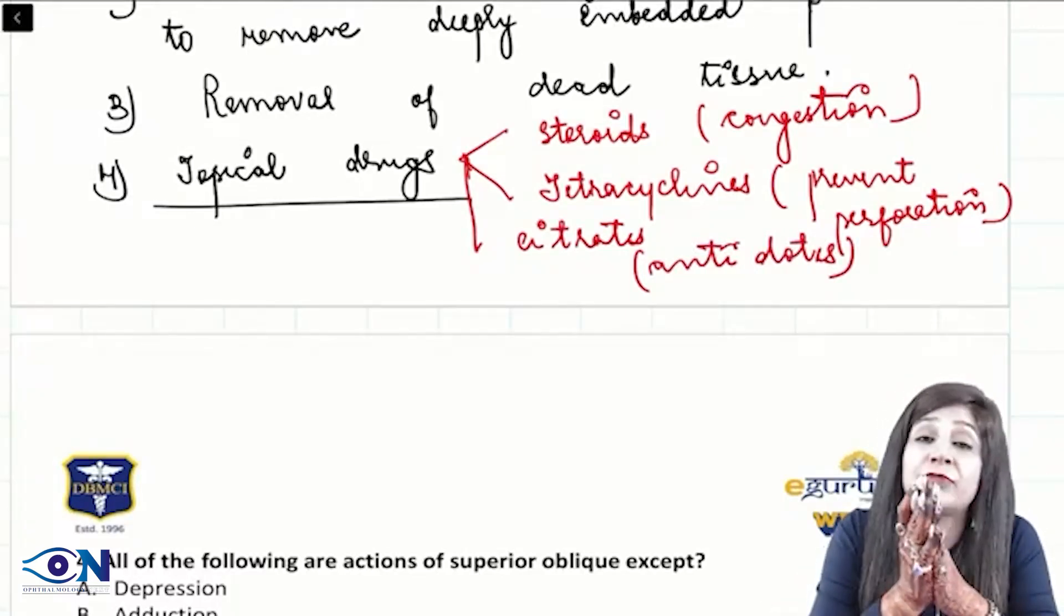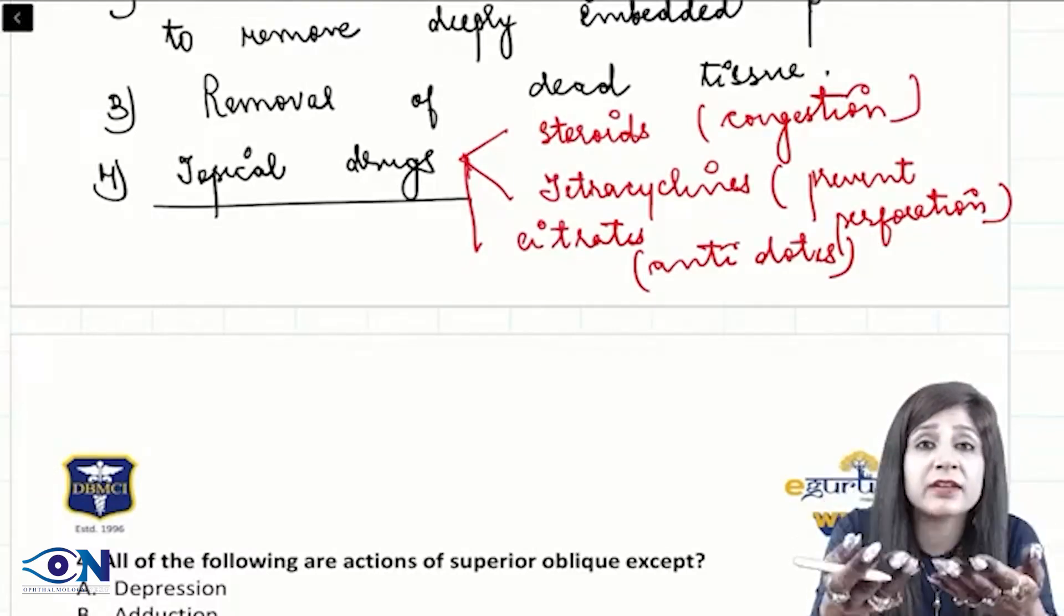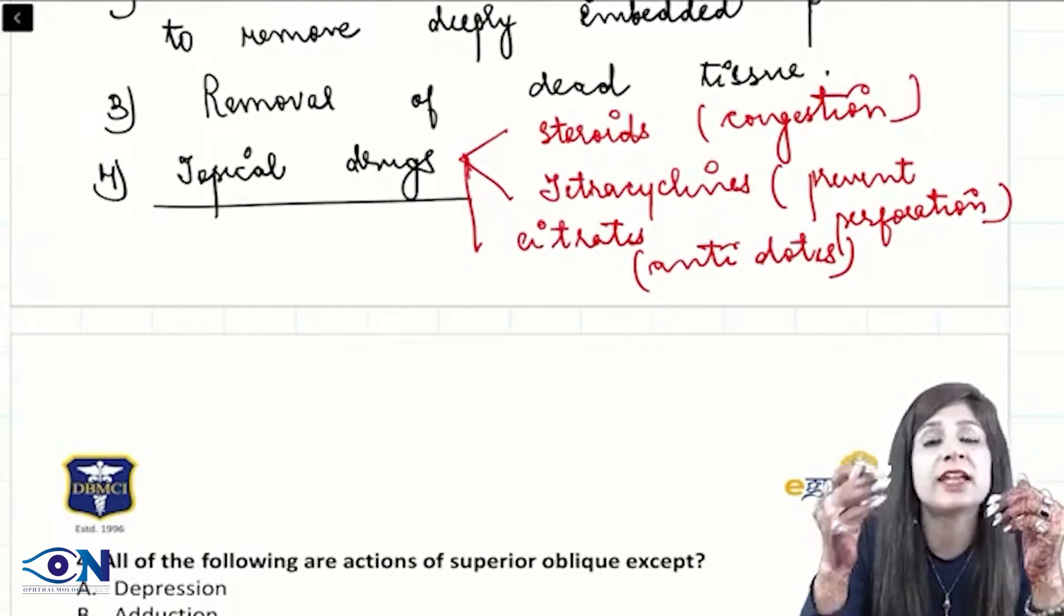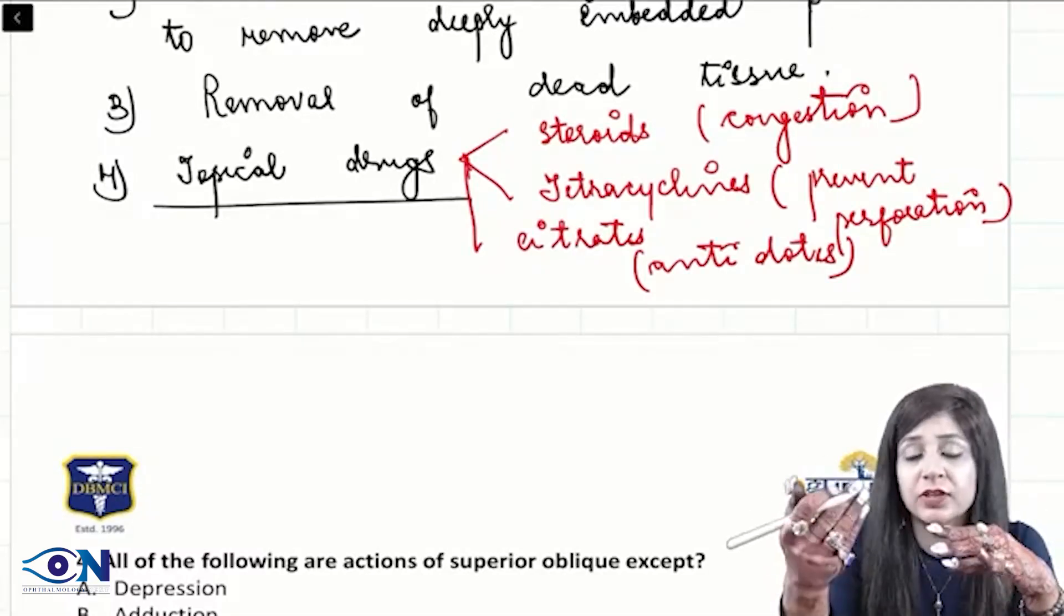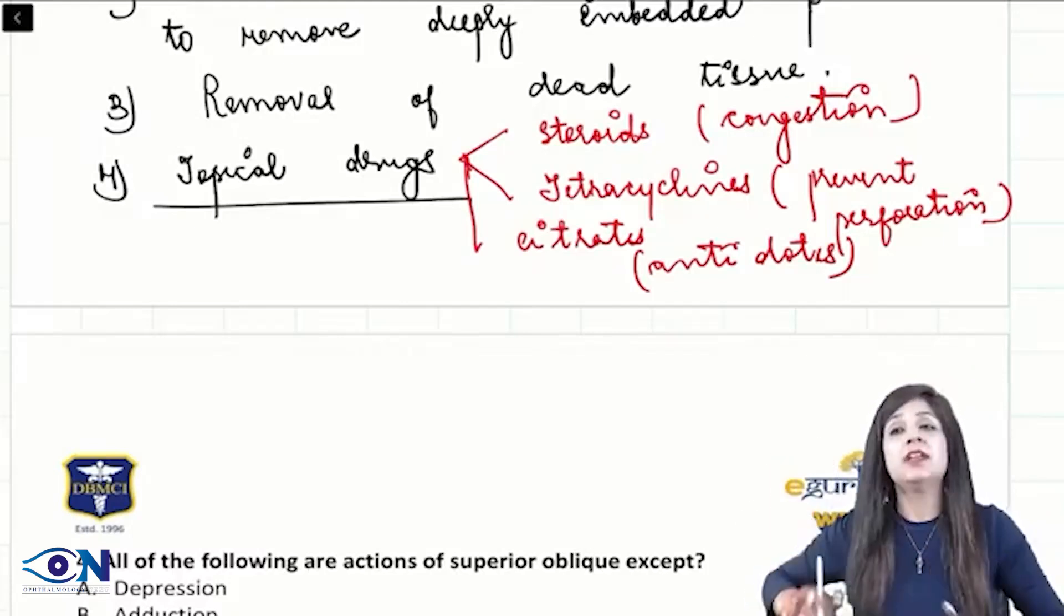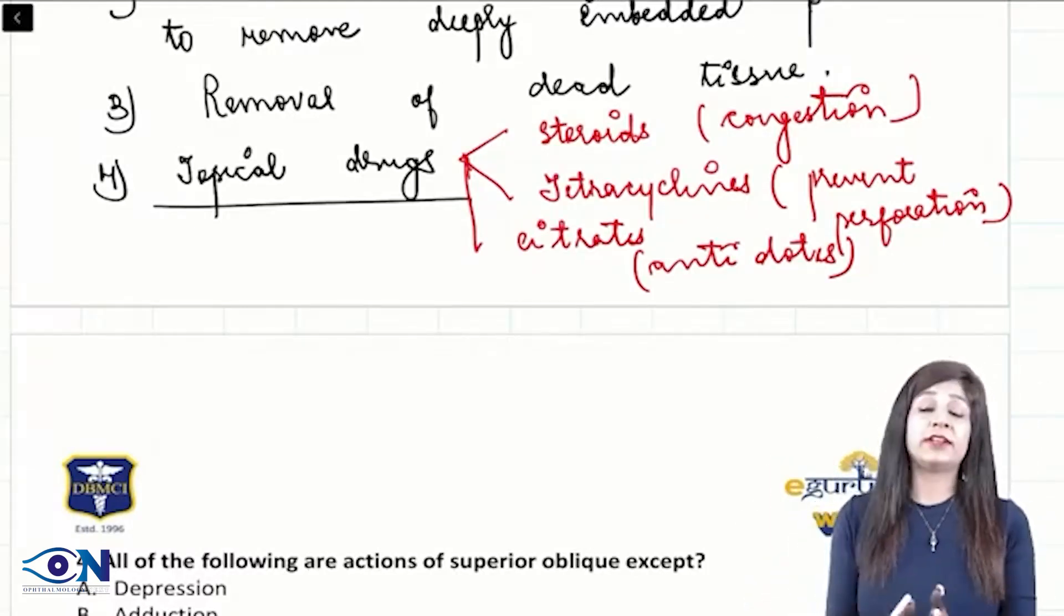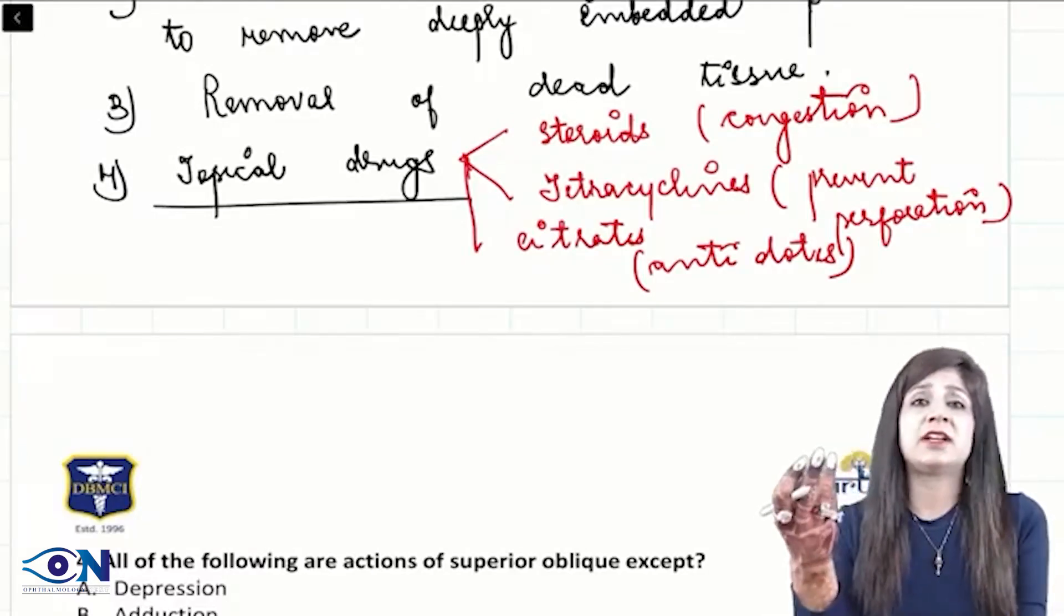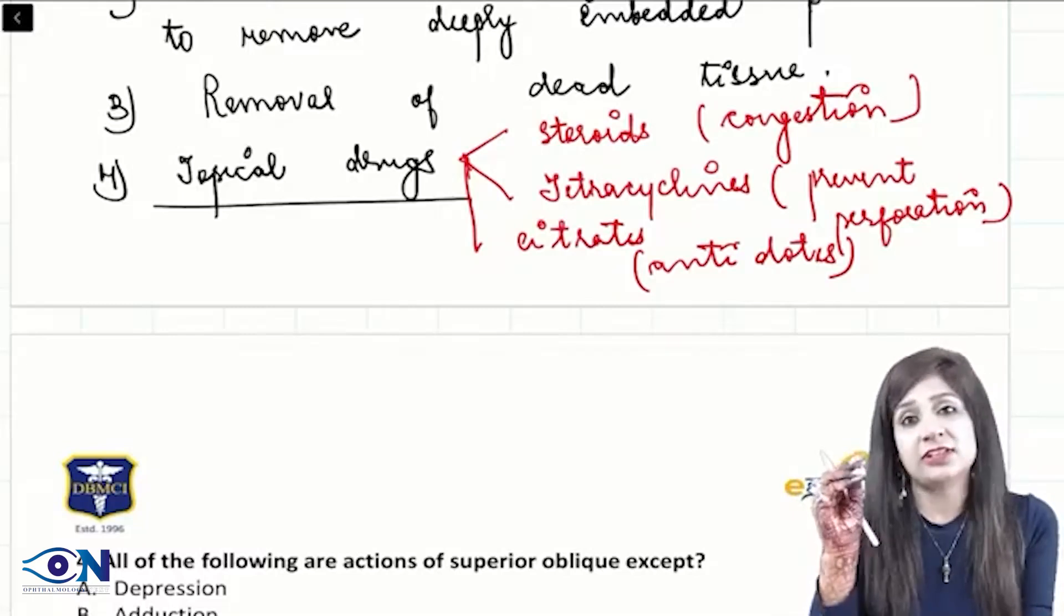Obviously we have to give the antibiotics because there is risk of infection. But the tetracycline or doxycycline that we are giving, they are not just given for infection but also to prevent the risk of perforation. If you see in corneal ulcers also, whenever we have bacterial ulcers, we have impending perforations, then we give tetracycline group of drugs.